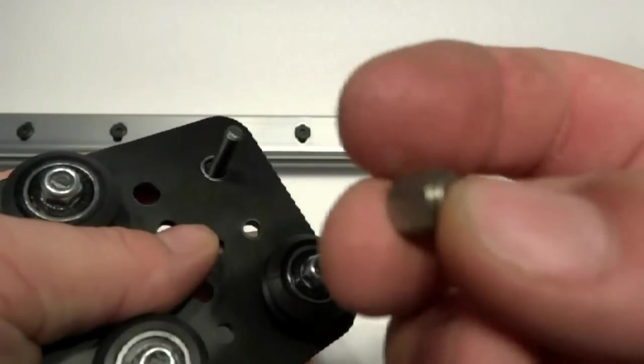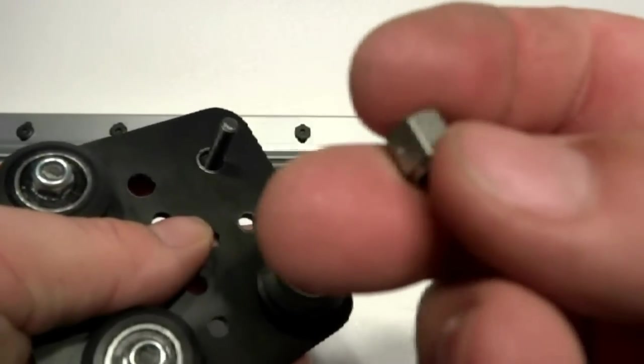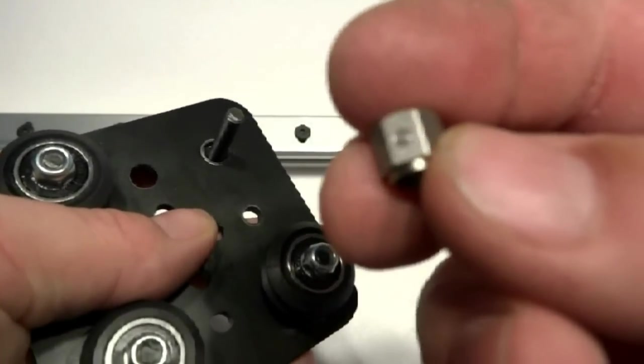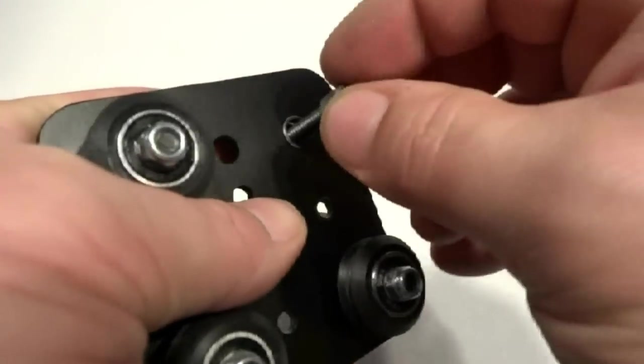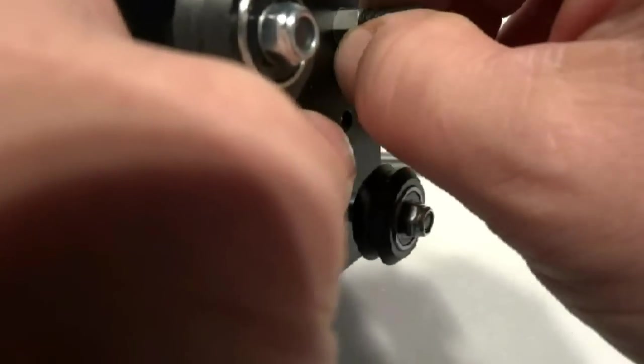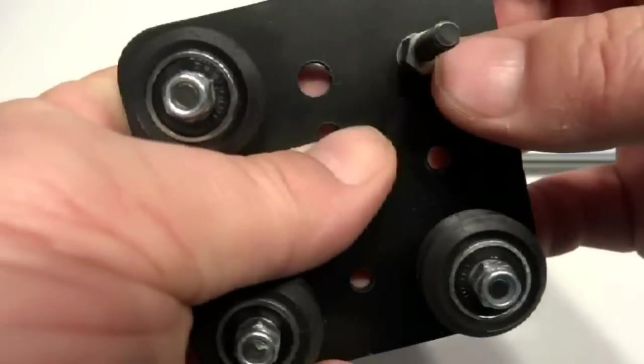I'm going to take your Eccentric bushing, Eccentric spacer, and you'll notice it has a small divot. The divot is on the side that's farthest away from the center. So I'm going to slide this on. It doesn't really matter where the divot is at this point.